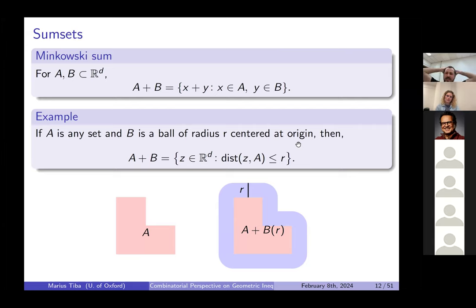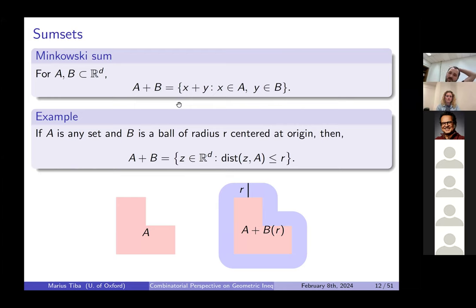The inequality I actually want to talk about is the Brunn-Minkowski inequality, which is closely related to the isoperimetric inequality and in fact implies it. To state it, let me introduce the Minkowski sum: given two sets A and B in Euclidean space, the set A + B consists of all elements x + y with x in A and y in B. This appears naturally in geometry: if B is a ball of radius r centered at the origin, then A + B is the r-neighborhood of A.